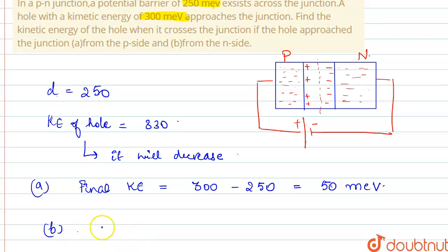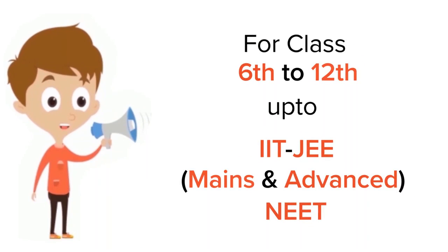And from the n-side, it will be 300 plus 250, that is 550. Hope you understood this well.